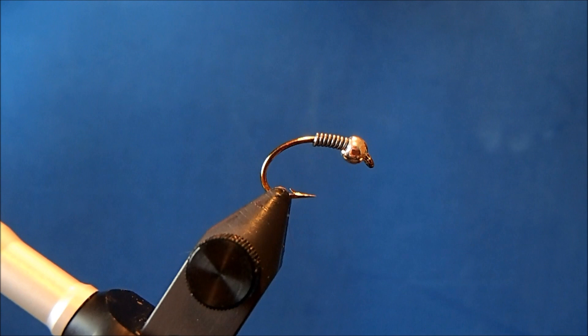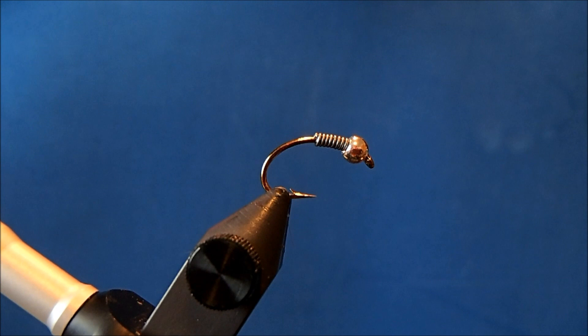I'm going to tie a Hammer Creek Superball and I'm starting off with a Green Caddice Outfitters 2457 scud hook in size 10. I've got an 1/8 inch silver bead and 10 wraps or so of lead for additional weight.